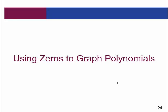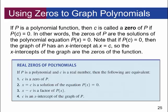The next topic is using zeros to graph polynomial functions. If p is a polynomial function, then a value c is a zero of p if p of c equals zero. In other words, the zeros of p are the solutions of the polynomial equation p of x equals zero. Note that if p of c equals zero, the graph of p has an x-intercept at x equals c. So these zeros find the x-intercepts — the x-intercepts of the graph are the zeros of the function.